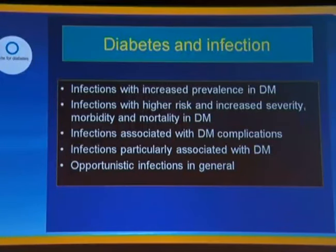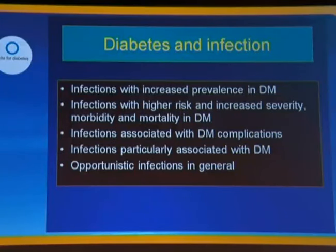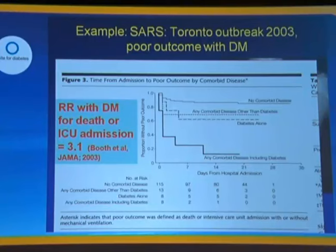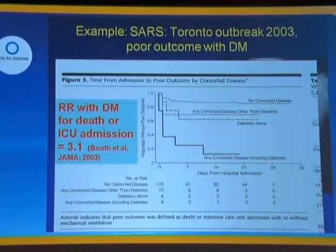In the context of diabetes, we note a number of infections with increased prevalence, a number of infections with higher risk, increased severity, morbidity and mortality, infections which may associate specifically with the presence of diabetic complications, infections which for other reasons may be particularly associated with diabetes, and opportunistic infections in general. As an example of the risk associated with diabetes and poor outcomes, this slide relates back to the SARS epidemic in 2003, an emerging disease which affected a number of countries in Asia and North America, and demonstrated that if diabetes was present, the relative risk for either death or intensive care admission was increased three-fold — and that three-fold increase seems to apply quite generally to a number of infections.